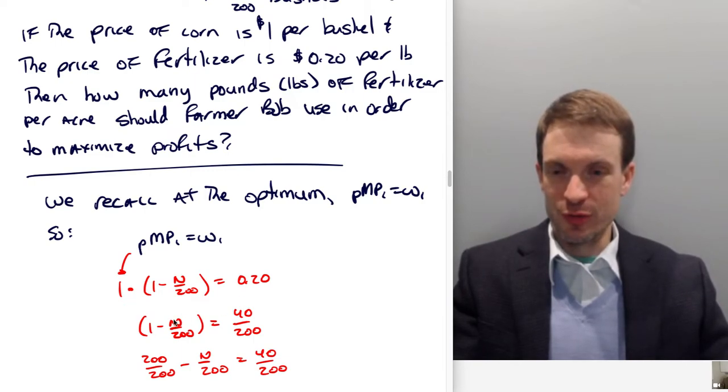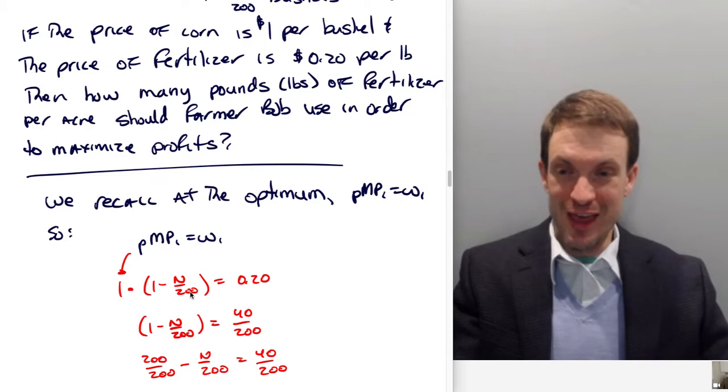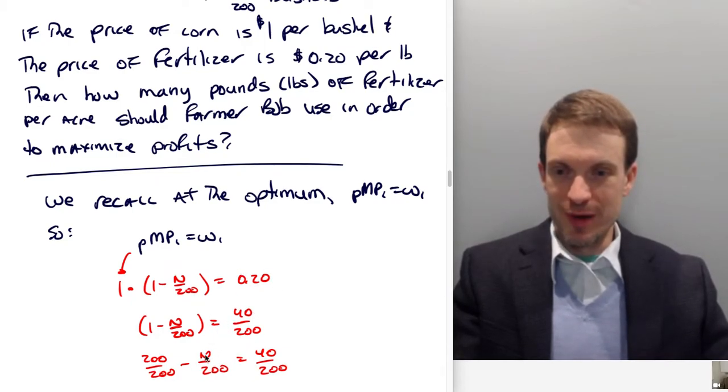So the thing that I want to do here is I just want to get this in terms of a common denominator. I'm going to write this as 200 over 200 because this is minus N over 200. I'm going to write this as 40 over 200 for my 20 percent.